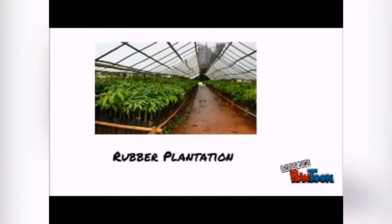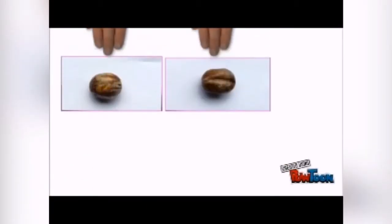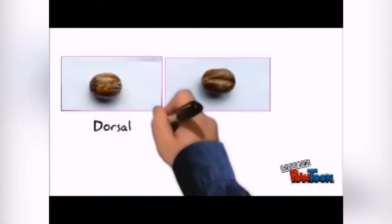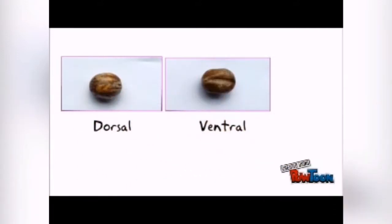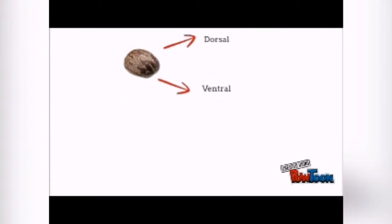I will introduce the problem of rubber plantation. At the surface of the rubber seed, there is dorsal and ventral, where the seed should be planted dorsal facing upwards and ventral facing downwards manually to ensure high germination rate.